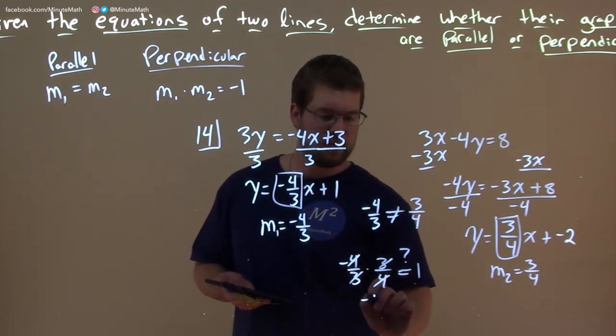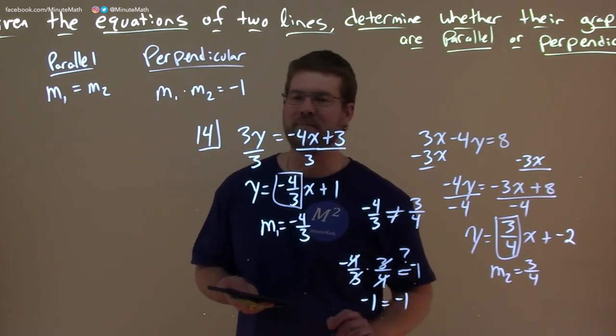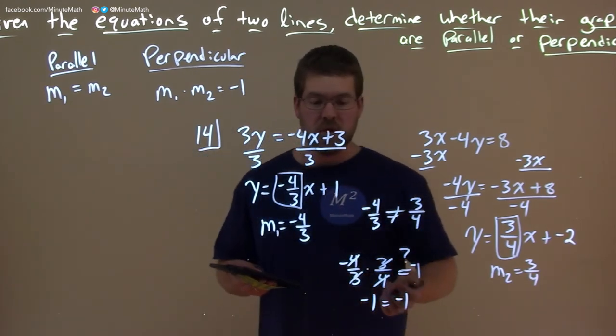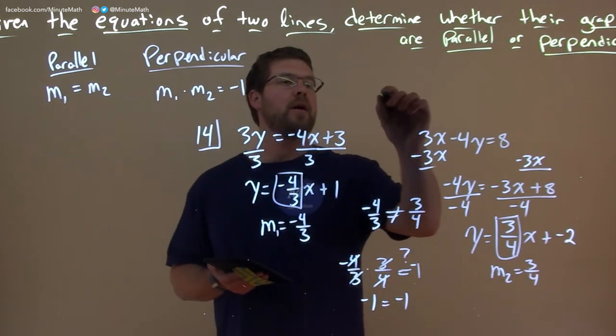So yeah, we have negative 1 here equals a negative 1, and we're good. So that tells us here by our test that these two lines are perpendicular.